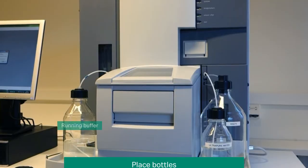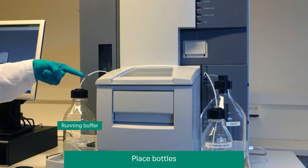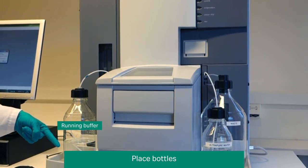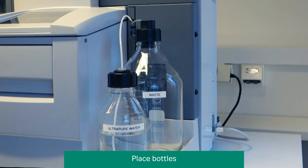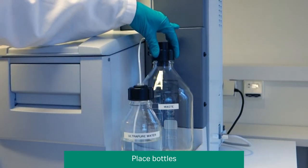Place a bottle filled with running buffer on the buffer tray on the left hand side of the instrument. Insert the tube marked A through the septum in the cap, making sure the tube sits at the bottom of the filled bottle. Place a 2 liter bottle for waste solution on the waste and water tray on the right hand side of the instrument. Fit the cap carrying the waste tubes to the bottle.